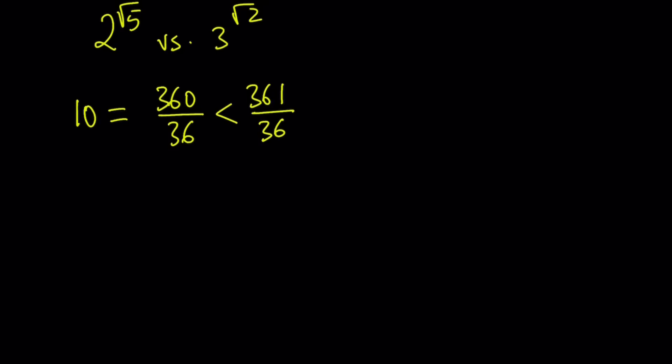Now, I'm going to go ahead, because 361 is 19 squared, I'm going to compare these two numbers, but I'm going to take square roots of both sides. So let's go ahead and do it. That's going to give us square root of 10 is less than the square root of 361 divided by 36, which can be written as 19 over 6, because 361 is 19 squared.